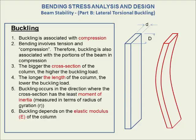To the right we have a buckled ruler. The failure mode of buckling is something we discussed and have an intuition for. We know that buckling is associated with compression, as stated in point one. Point two notes that since bending involves both compression and tension, we would not be surprised if the phenomenon of buckling manifests itself in the portion of the beam that undergoes compression.